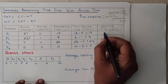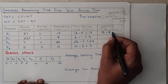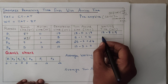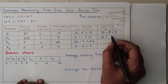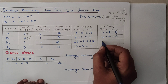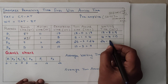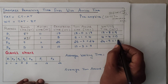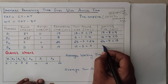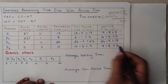Waiting time equals turnaround time minus burst time. For P1: 17 minus 8 equals 9 milliseconds. For P2: 4 minus 4 equals 0. For P3: 24 minus 9 equals 15 milliseconds. For P4: 7 minus 5 equals 2 milliseconds.